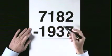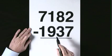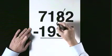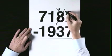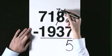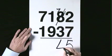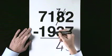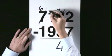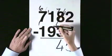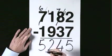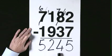7,182 subtract 1,937. 2 take 7 is not possible, exchange from the 8. 8 becomes 7, 12. 12 takes 7 is 5. 7 take 3 is 4. 1 take 9 is not possible, exchange from the 7. 7 becomes 6, 11. 11 take 9 is 2. 6 take 1 is 5. The answer is 5,245.